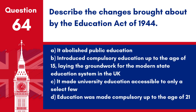Question 64: Describe the changes brought about by the Education Act of 1944. a. It abolished public education. b. Introduced compulsory education up to the age of 15, laying the groundwork for the modern state education system in the UK. c. It made university education accessible to only a select few. d. Education was made compulsory up to the age of 21. Answer: b. The Education Act of 1944, also known as the Butler Act, was a landmark piece of legislation that reformed the education system in England and Wales.